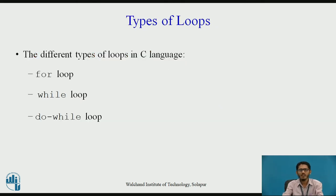These are the types of loops in C language: the for loop, the while loop, and the do while loop. In the previous lecture, we have seen the for loop. Now, this time we will see the while loop.